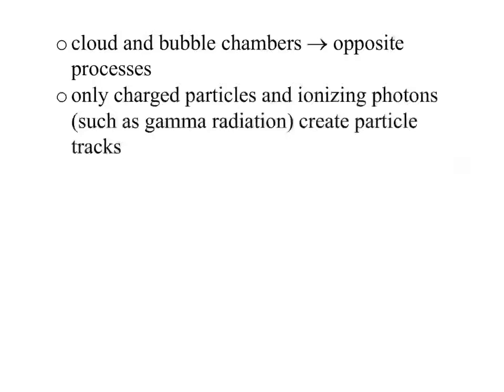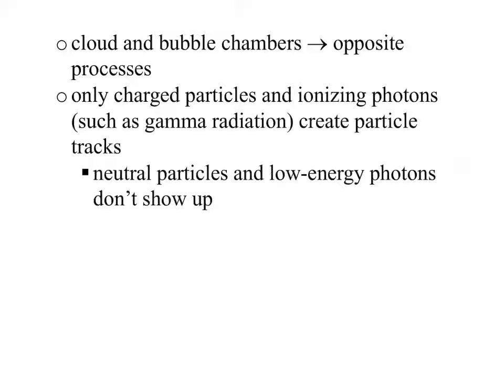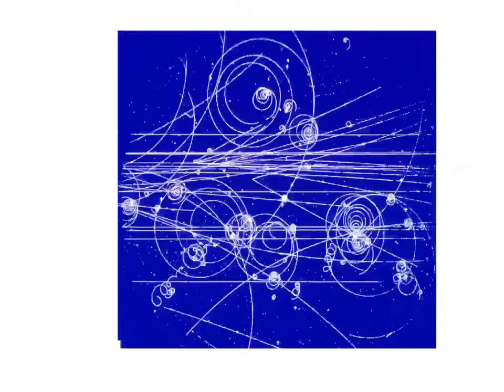Really important: only charged particles and ionizing photons can create particle tracks. If a neutron is going through here, we're not going to see anything — no bubble, no cloud. Only a charged particle — so an electron, a proton, or a really high-energy photon like gamma radiation — is going to create a particle track. Neutrons and low-energy photons are not going to show up.